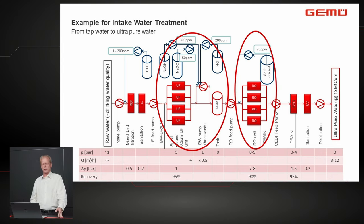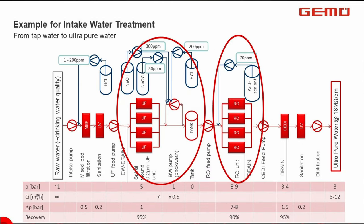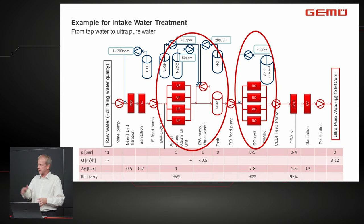Here is an example of a process going from tap water to ultra-pure water, which is used in pharmaceutical, semiconductor, and power-to-X applications. The treatment steps include ultrafiltration, reverse osmosis, and various chemical dosing. For all these process steps, a lot of valves are needed, and each valve must be selected according to requirements such as chemical resistance, flow, and pressure.